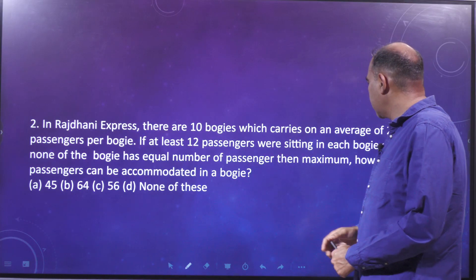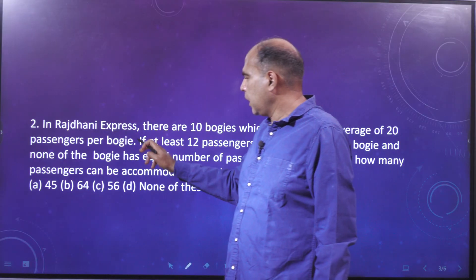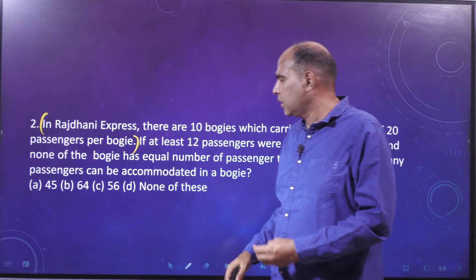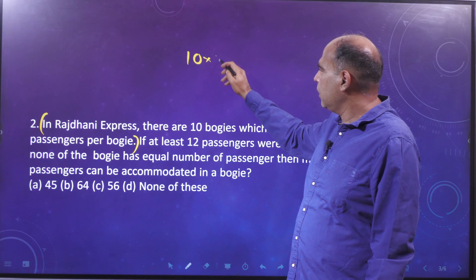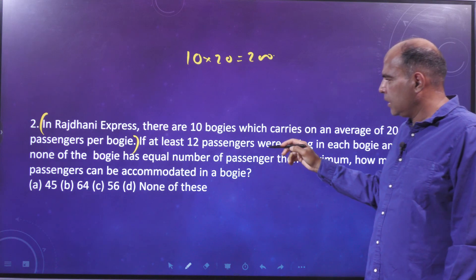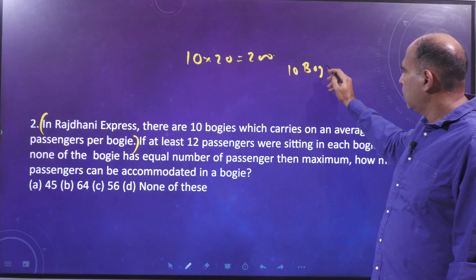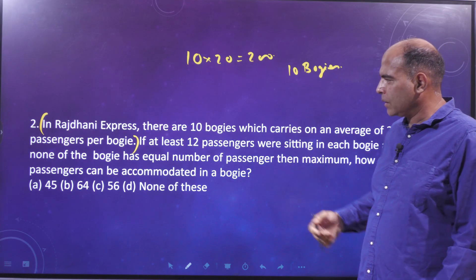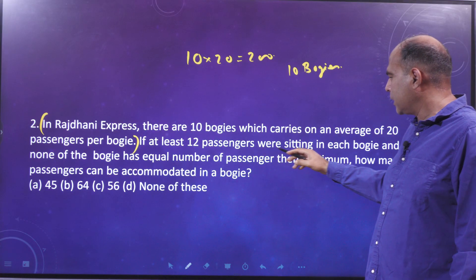The second question: in Razani Express there are 10 bogeys which carry an average of 20 passengers per bogey. From this you get the total number of passengers in the train, which is 10 into 20, which is 200.